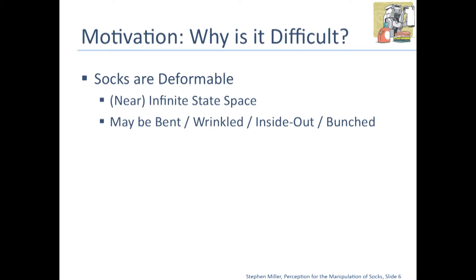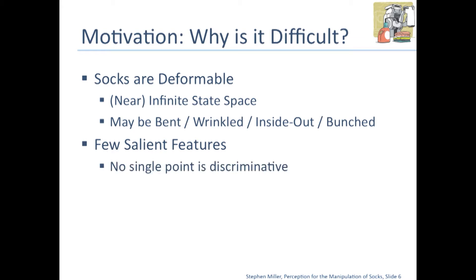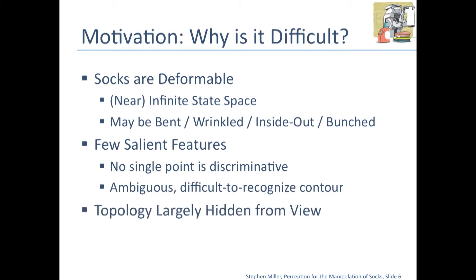They can be bent, wrinkled, inside out, or bunched. They also have very few salient features on them — often no single point of the texture is very discriminative. They trace an ambiguous contour, so you can't just look at the shape to figure it out. And the topology is largely hidden from view. All of our motions are guided by the fact that we have this tubular structure, but we often can't even see the opening or the fact that it's a tubular structure in 3D. So we need to use a priori knowledge about it.